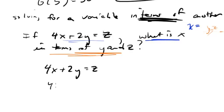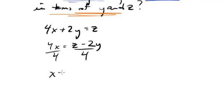Well, let's subtract 2y from both sides. That's going to be z minus 2y. I want to get this x by itself, so I'm going to divide everything by 4.